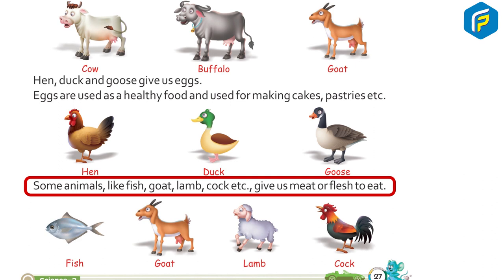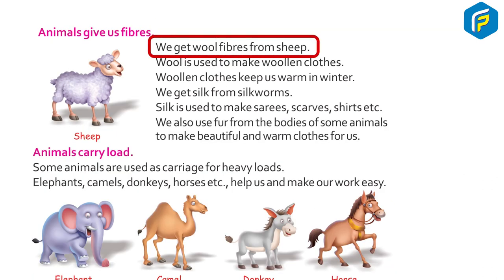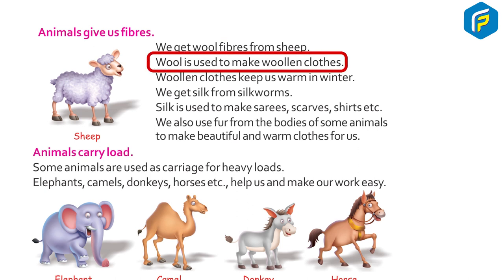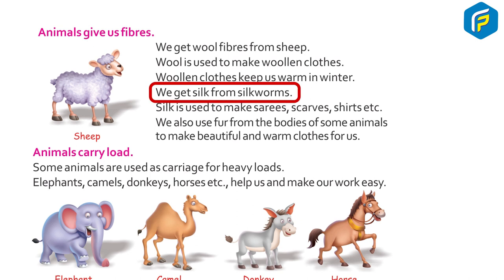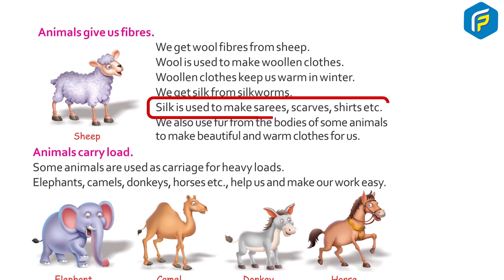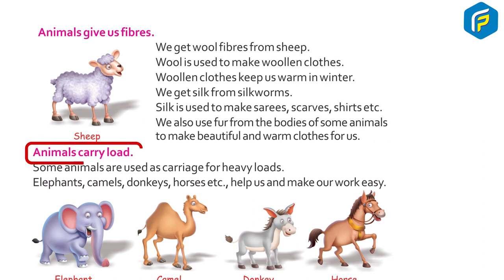Animals also give us fibers. We get wool fibers from sheep. Wool is used to make woolen clothes, which keep us warm in winter. We get silk from silkworms. Silk is used to make sarees, scarves, shirts, etc. We also use fur from the bodies of some animals to make beautiful and warm clothes.